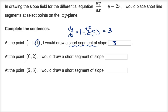Moving on to the point zero comma two — when x is zero and y is two, the derivative of y with respect to x is equal to y, which is two, minus two times zero. That's just going to be two.